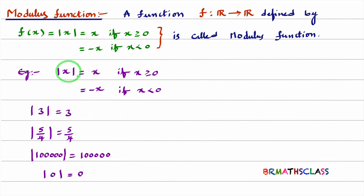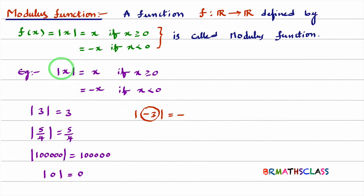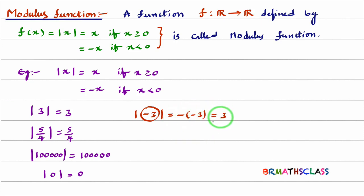Now see this second case — it is important. Modulus of minus 3: minus 3 is less than 0, so it is under the second case. When x is less than 0, modulus of x is minus x. Modulus of minus 3 is minus of minus 3. Minus of minus is plus, so modulus of minus 3 is 3.